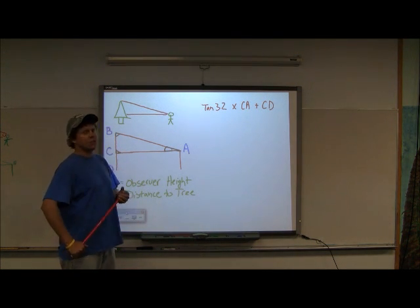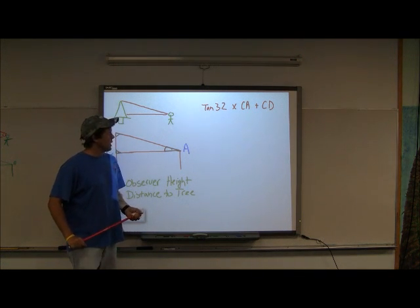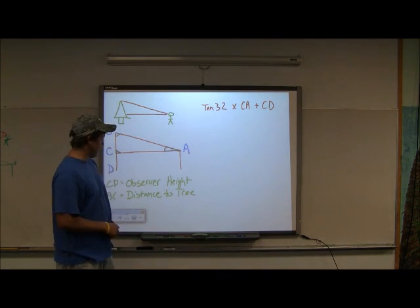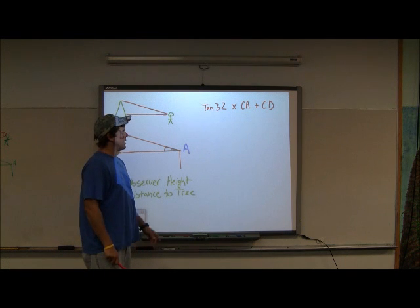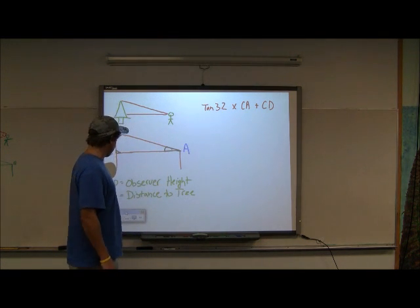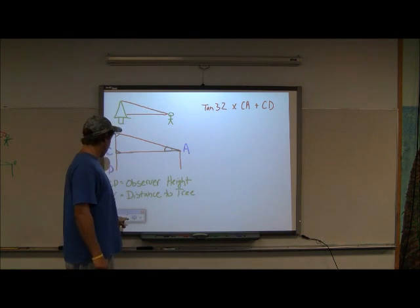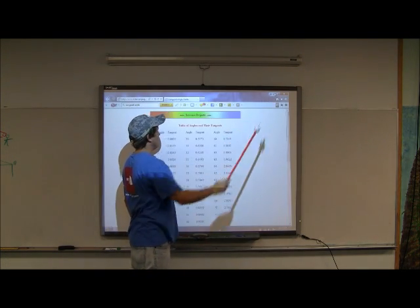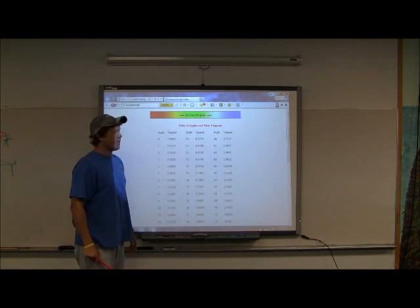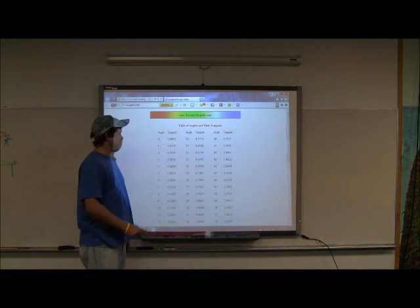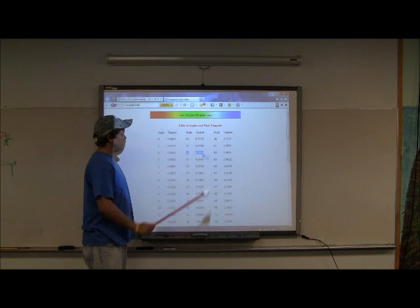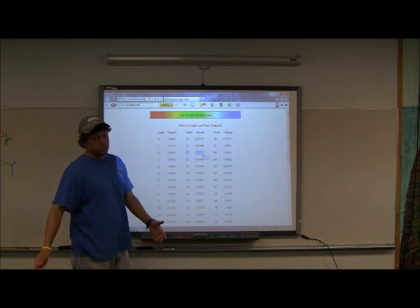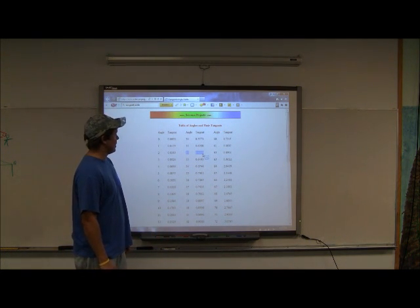Alright, so our angle ended up being 32 in our measurement, and here is the formula that we are going to use in order to find the height of a tree. First of all we need to find the tangent of the angle 32. You can do that two ways, you can use a calculator, or you can go online and find a tangent table. It will give you all the angles possible, and you can just go to the angle that you need and find it. Right here I have 32, and my tangent for angle 32 is 0.6248. We will just round to two decimals, so we will use 0.62.